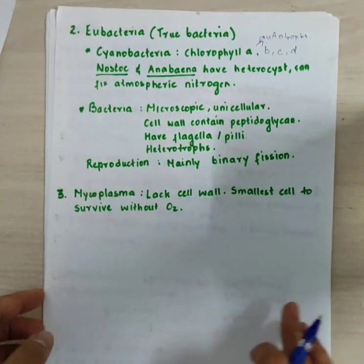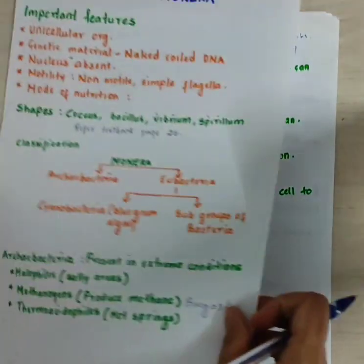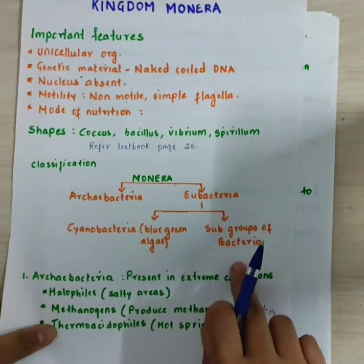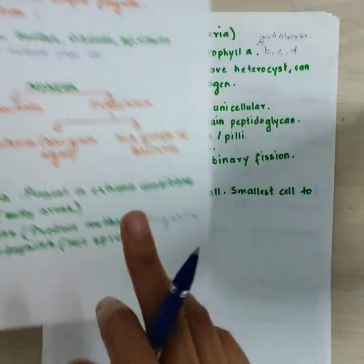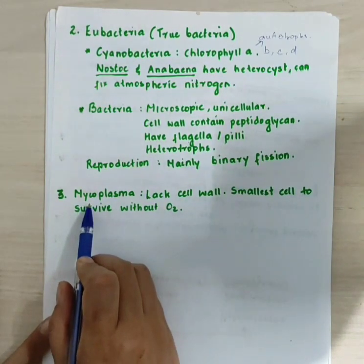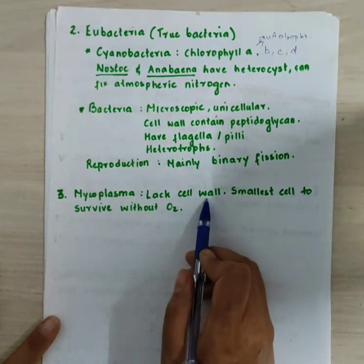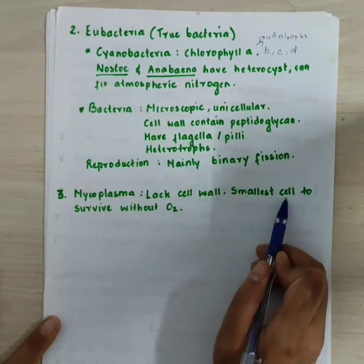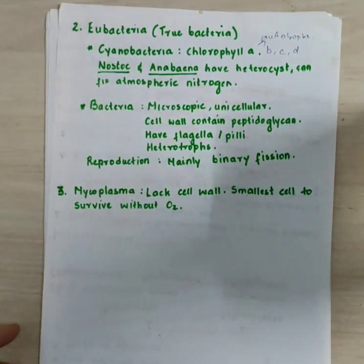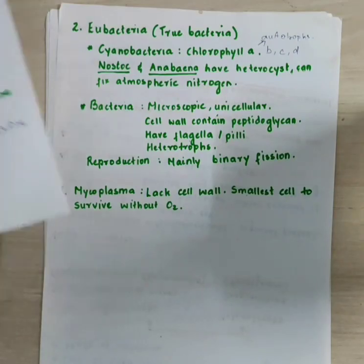Among other groups of bacteria, we have mycoplasma. Mycoplasma do not have a cell wall. They are the smallest living cells and are able to survive without oxygen. That is about Kingdom Monera.